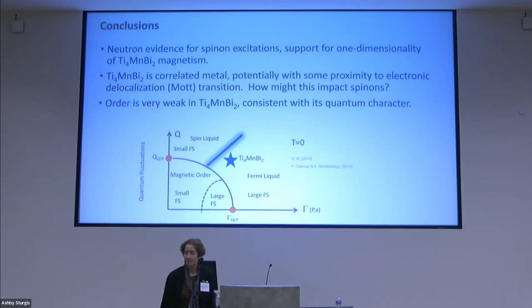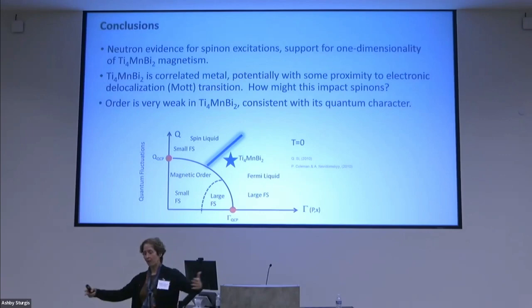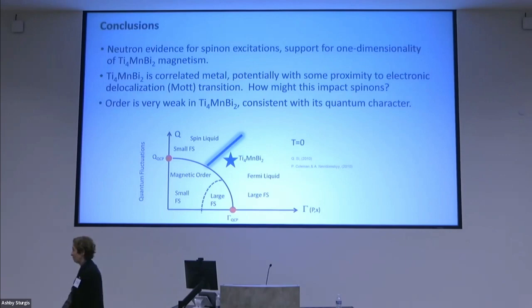So you said the Curie-Weiss law, that you have antiferromagnetic fluctuations with Q equals zero? It doesn't necessarily mean that we're close to a ferromagnetic transition. We see really no evidence for that in the magnetization or anything like that. What we have is dispersion centered around Q equals zero, and there's no spectral weight—we've looked out all the way to the zone boundary, and there's no additional spectral weight.